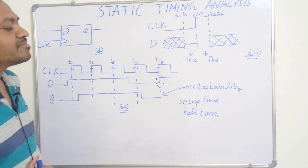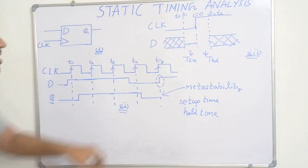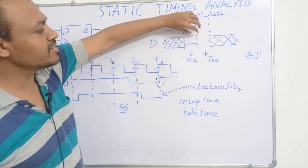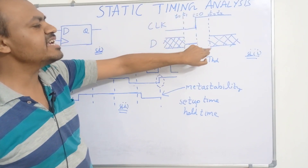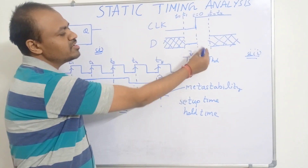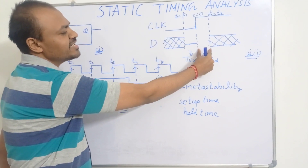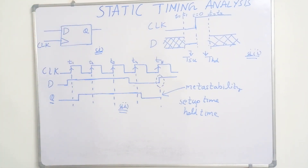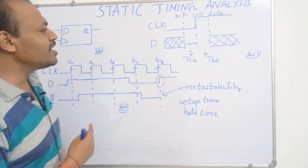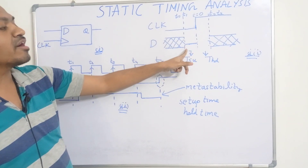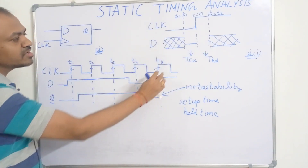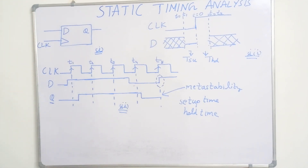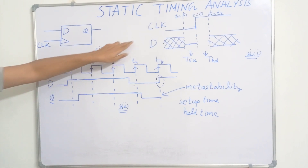Another condition is called the hold time constraint. The clock edge has arrived at T equal to 0. After the arrival of the clock edge also, this D input should not change between T equal to 0 to T equal to T2. This is called the hold time. Hold time is the minimum amount of time after the arrival of the clock edge — setup time was before the arrival of the clock edge, hold time is after — for which our data D must remain stable.